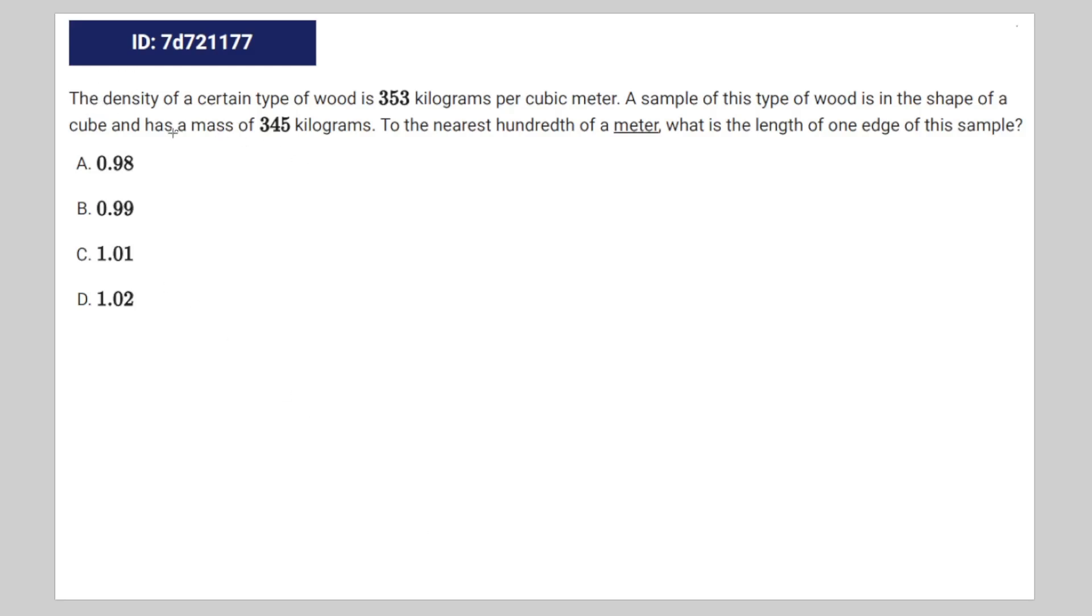So we're given the following math problem: The density of a certain type of wood is 353 kilograms per cubic meter. A sample of this type of wood is in the shape of a cube and has a mass of 345 kilograms. To the nearest hundredths of a meter, what is the length of one edge of the sample?